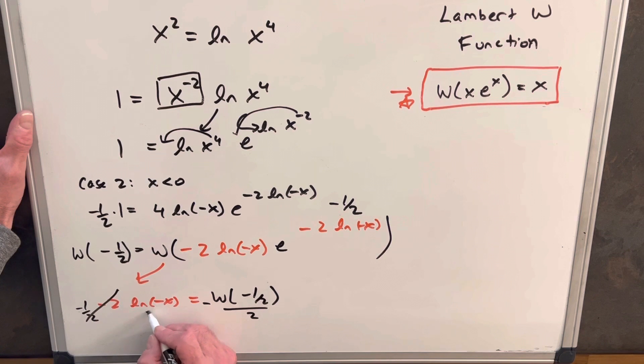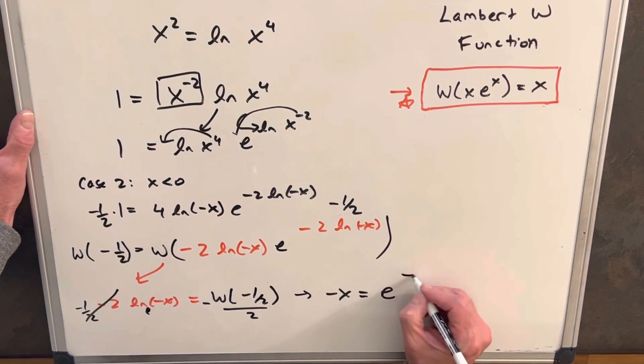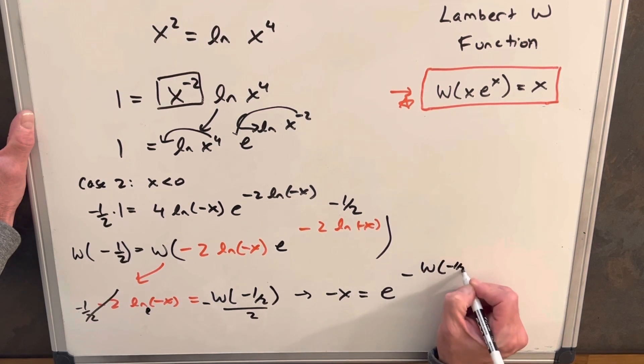Then we'll raise to the natural log, so we're going to have minus x equals e to the minus W of minus 1/2.